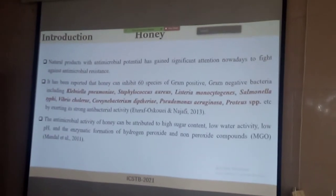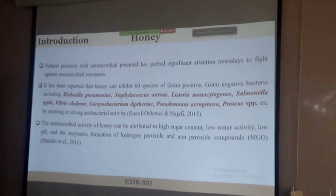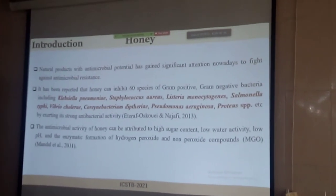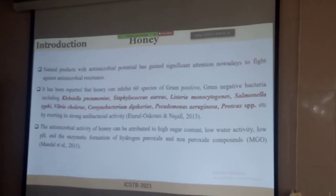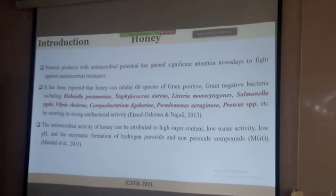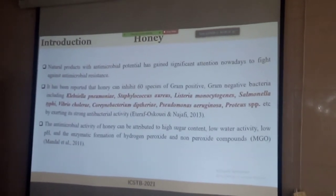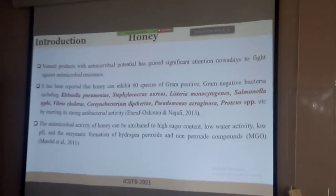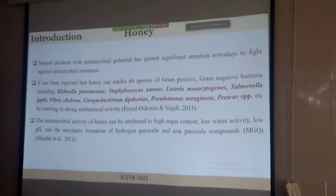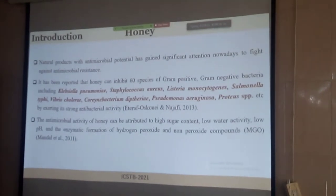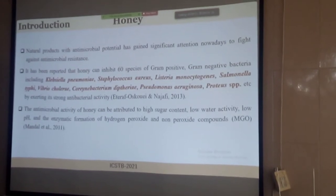We focused on honey as a natural product with huge antimicrobial potential, which is evident in scientific literature. A study reported that honey can inhibit around 60 species of different gram-positive and gram-negative bacteria, such as Klebsiella pneumoniae, Listeria monocytogenes, Salmonella typhi, and Vibrio cholerae — common human pathogens that cause diseases such as pneumonia, listeriosis, cholera, and dysentery in humans.